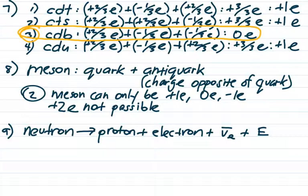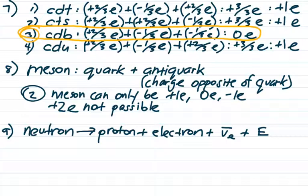Number nine: based on conservation laws, how does the mass of the neutron compare to the mass of the proton? The neutron has to be heavier. From one neutron we wind up with a proton, an electron (much lower mass than the proton, but has some mass), an electron anti-neutrino (teeny tiny mass, but some mass), and some energy. That energy came from the mass of the neutron. So the neutron must have larger mass than the proton.